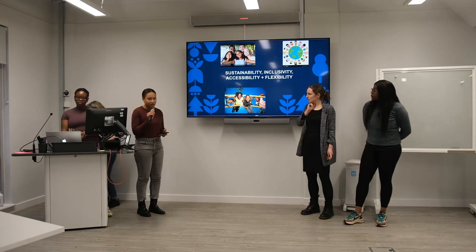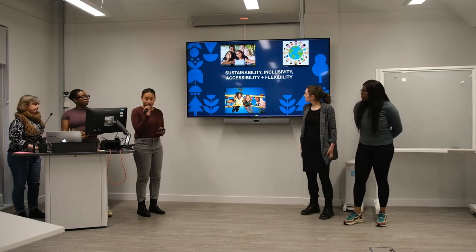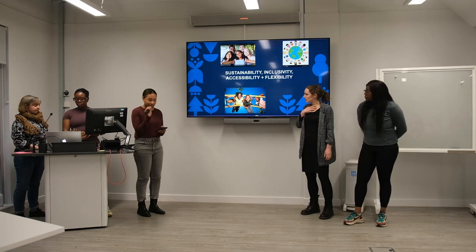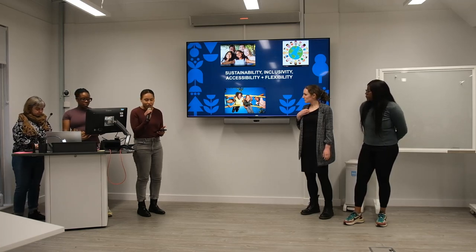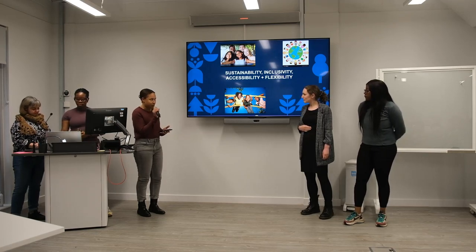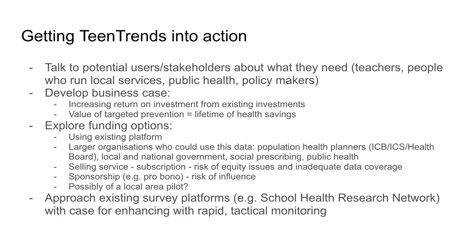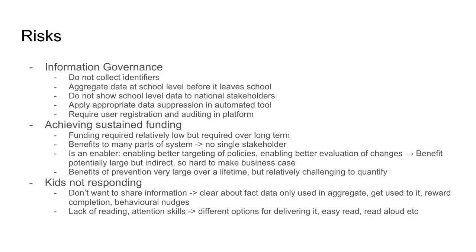We're sustainable because we're running surveys on a termly cycle. Inclusive because our focus groups include diverse individuals from the target community. Accessible because they're being implemented in all schools, and the format lends itself to modifications like Braille and large print. Flexible — we can modify and add questions quickly, maintaining relevance. We've thought about how to get Team Trends into action: talking more to users, exploring funding options, developing business cases, and approaching existing platforms. Importantly, surveys already exist in schools — we're already collecting this data, but too slowly. We need an additional tactical approach. We've also considered risks.